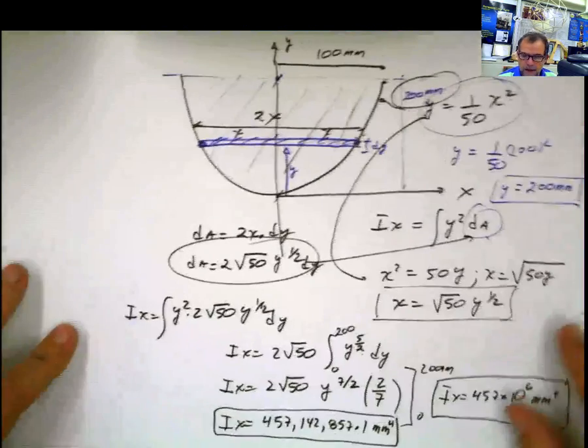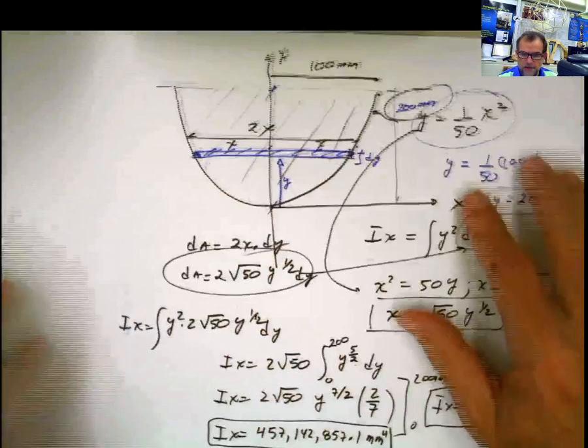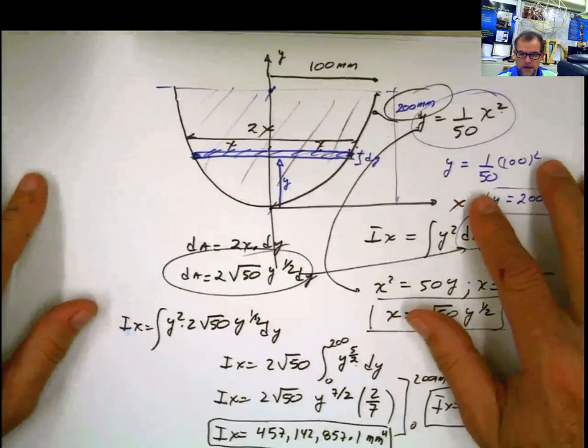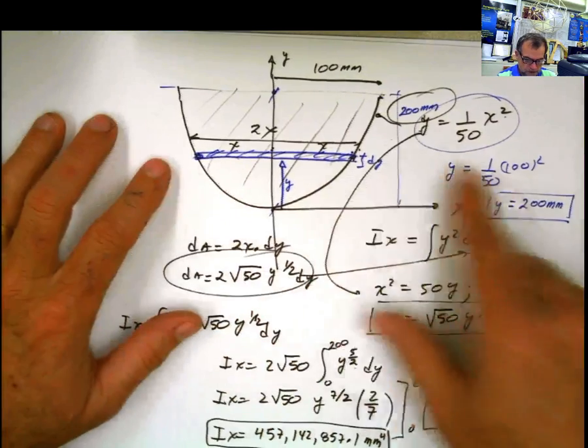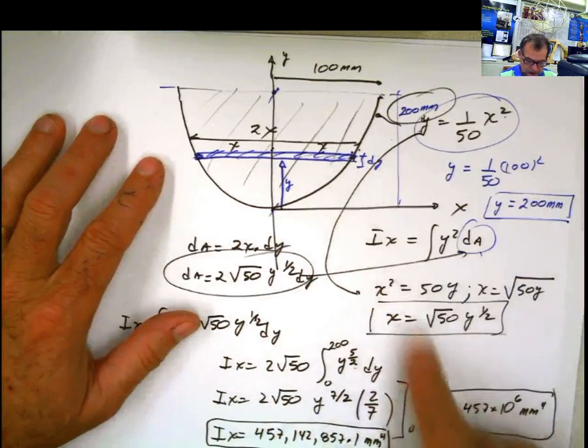Method number two. I'm going to solve method number two for doing the same problem that we were solving before. If you have been watching the video, you should remember this. One of the things we did was calculating this shape — we have this parabola — and we had to calculate the centroid with respect to the x-axis.